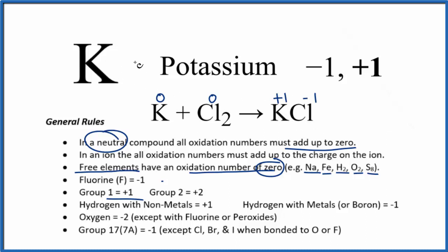It's no longer a free element because it's bonded to the chlorine. So to recap, potassium by itself as a free element, it's called elemental potassium, that'll have an oxidation number of zero. But when it bonds to something else, most likely its oxidation number will be plus one.